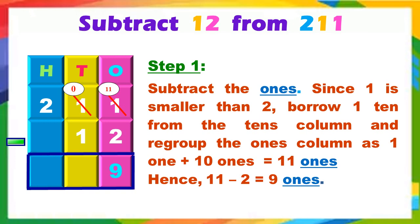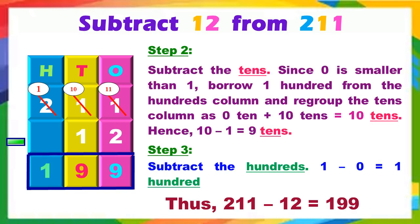Second, subtract 211 minus 12. Step 1: Subtract the ones. Since 1 is smaller than 2, borrow 1 ten from the tens column and regroup the ones column as 1 one plus 10 ones equals 11 ones. So 11 minus 2 is equal to 9 ones. Step 2: Subtract the tens. Since 0 is smaller than 1, borrow 1 hundred from the hundreds column and regroup the tens column as 0 tens plus 10 tens equals 10 tens. So 10 minus 1 is equal to 9 tens. Step 3: Subtract the hundreds — 1 minus 0 is equal to 1 hundred. Thus, 211 minus 12 is equal to 199.